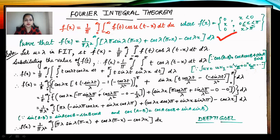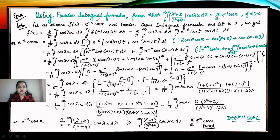For the next numerical, we have to prove using the Fourier integral formula that ∫₀^∞ [(λ² + 2)/(λ² + 4)] cos(λx) dλ = (π/2) e^(−x) cos x, for x > 0.